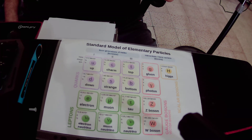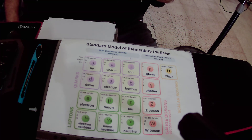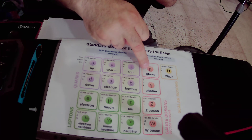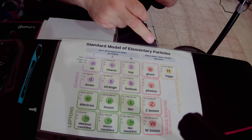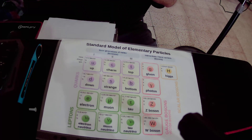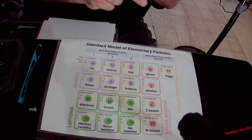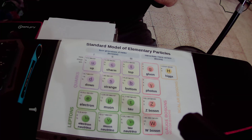The 4 elementary force particles in the red color carry the 4 fundamental forces in nature. The first force particle is the gluone, which carries the strong nuclear force that binds the protons together in the nucleus of the atom. We have 8 types of gluones. Then we have the photon, which carries the electromagnetic force that explains how charged particles interact with each other.